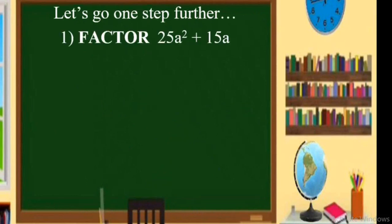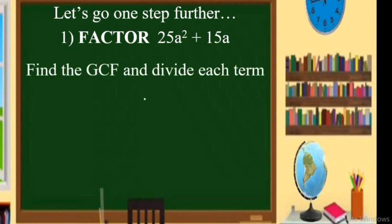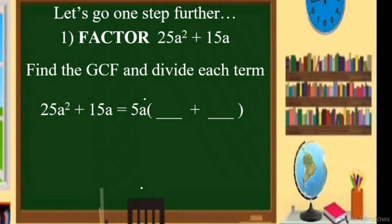Now we go on to factoring using the common monomial factor. Let us have an example: factor 25a squared plus 15a. The first thing you have to do is find the GCF of these two terms, which is 5a. We write 5a and then divide both terms by 5a: 25a squared divided by 5a, plus 15a divided by 5a. So our final answer is 5a times the quantity 5a plus 3.